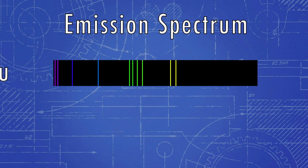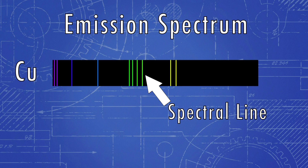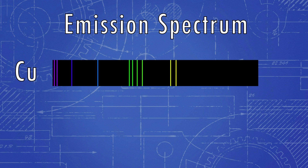If we look at an emission spectrum for copper, showing all the different wavelengths of light given off, each line corresponds to a different quanta of energy from a specific change in orbitals. These lines are called spectral lines, and for copper, we see most of them are in the green range, and the green ones have a higher intensity because they occur more often, so that is why we see green light from copper.